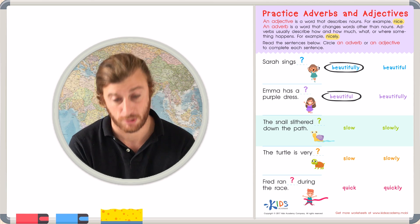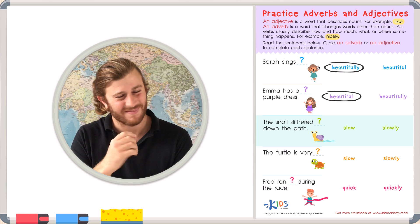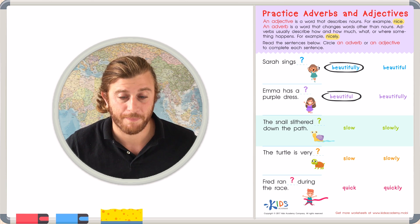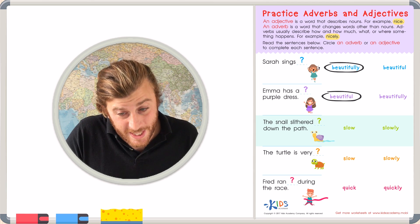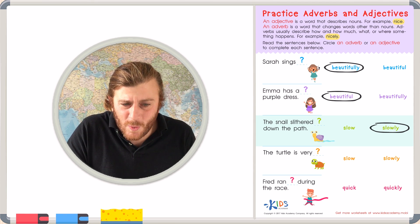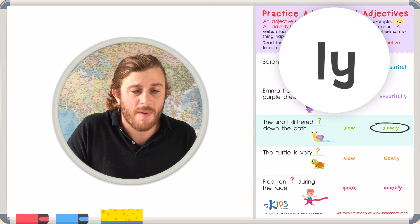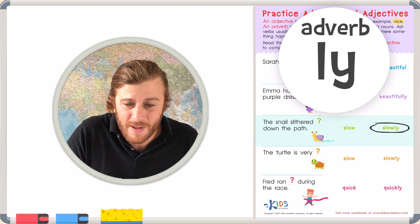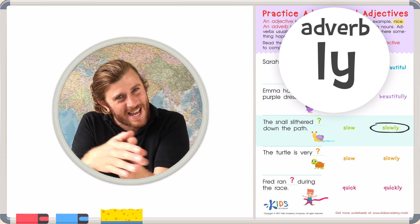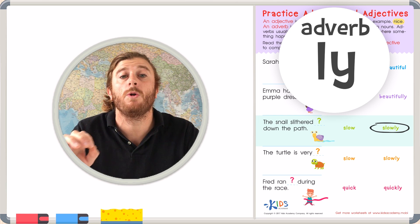The snail slithered slow down the path. Hmm. That doesn't sound quite right. The snail slithered slowly down the path. Slowly has an ly suffix at the end, which makes it an adverb. And in this case, the adverb is describing how the snail slithered. He didn't slither slow. He slithered slowly.